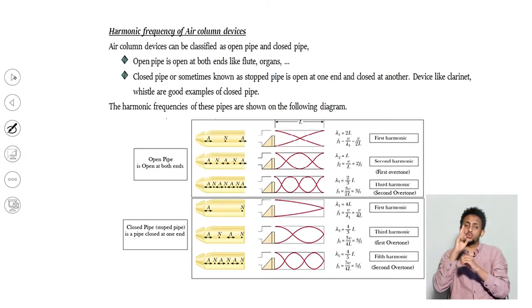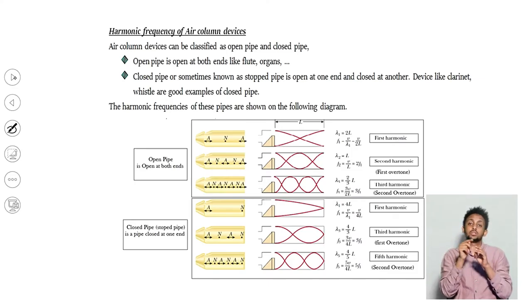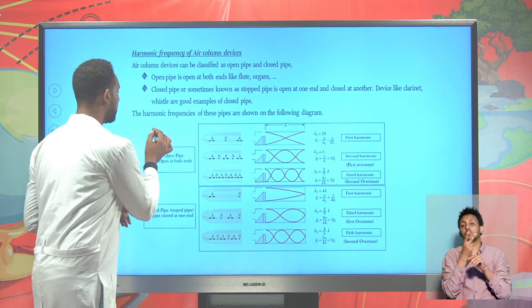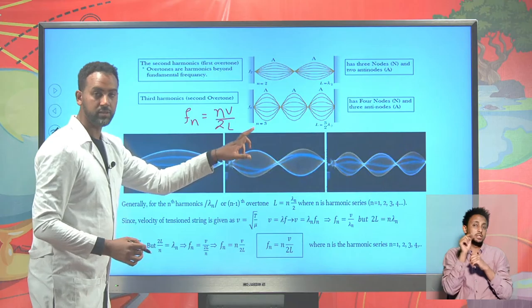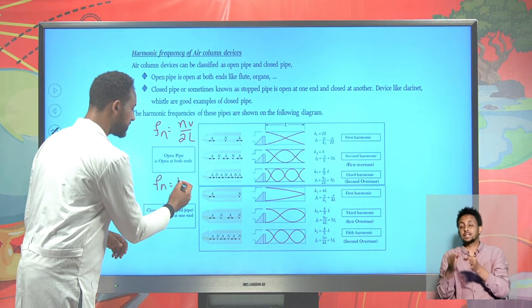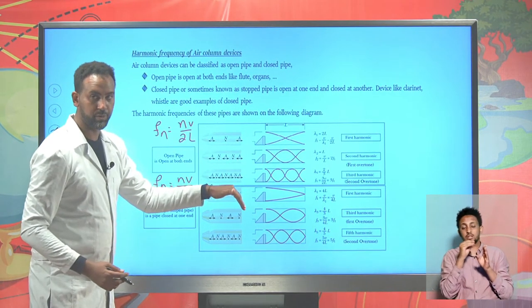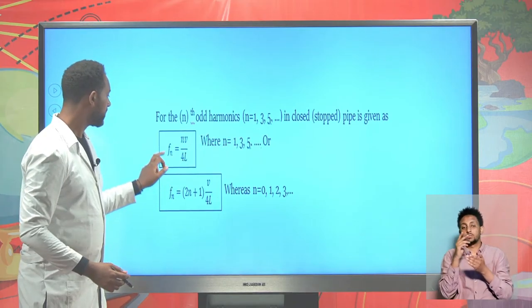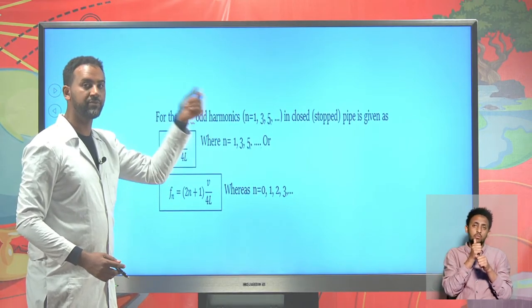For air columns, we have two types: both ends open is known as an open pipe, and if one end is open and the other is closed, it is known as a closed pipe or stopped pipe. The mathematical expression for an open pipe is the same as that of the string: fn = nv / (2L). But for a closed pipe, the nth harmonic is fn = nv / (4L). Note that for a closed pipe, n must be odd harmonics only - the first, third, fifth harmonic and so on. There are no even harmonics in a closed pipe.